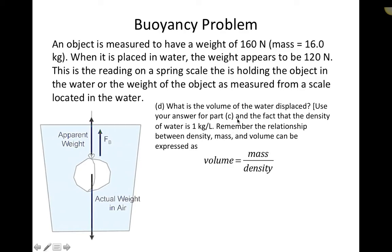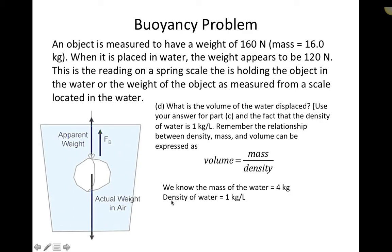The next part asks for the volume of the water displaced. Imagine the container again — the object is placed in and water spills out, caught in a container below. That collected water has a weight, a mass of 4 kilograms, and we want to know its volume. Using the formula volume equals mass divided by density, and knowing the density of water is 1 kilogram per liter, we get 4 kilograms divided by 1 kilogram per liter, which equals 4 liters.